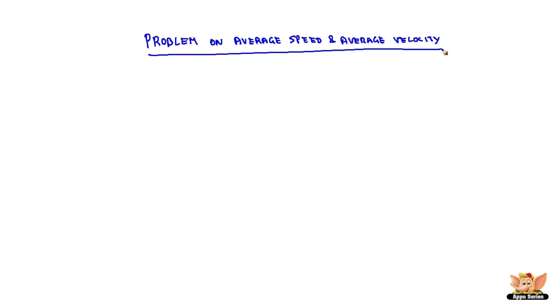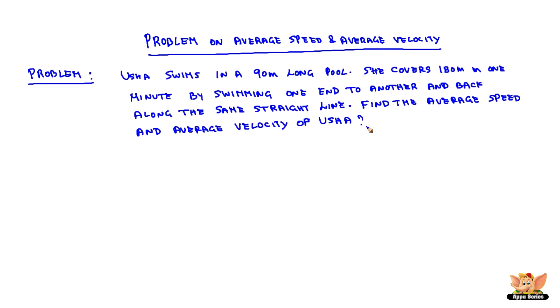Problems on average speed and average velocity. Let us state the problem. Usha swims in a 90-meter long pool. She covers 180 meters in one minute by swimming from one end to another and back along the same straight line. Find the average speed and average velocity of Usha.